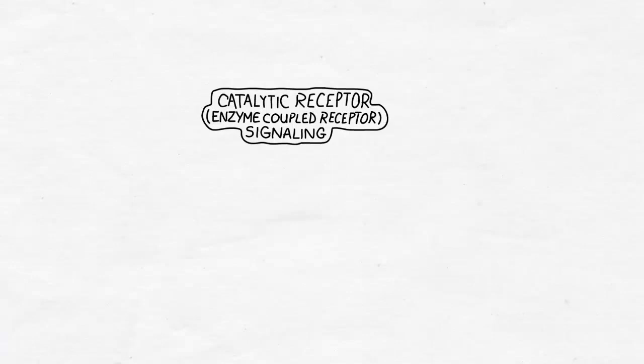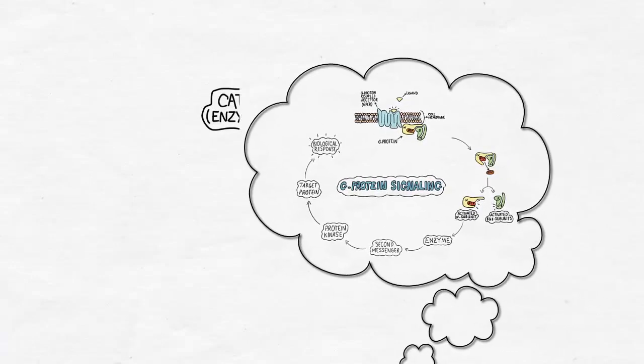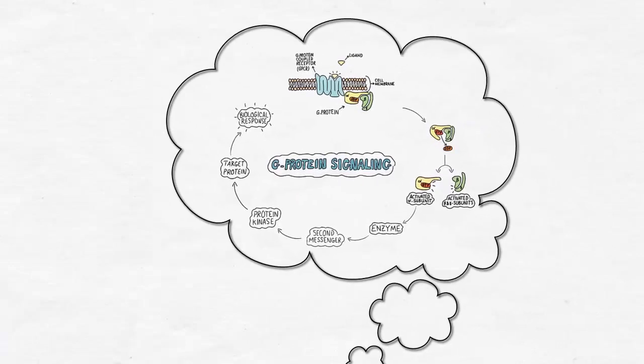If you remember the last lesson, we talked about the G-protein signaling, which involved a 7-helix transmembrane receptor, the GPCR, and a large heterotrimeric G-protein, the production of a second messenger, and the activation of a specific protein kinase according to the type of the G-protein.